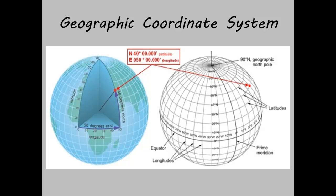Longitude and latitude can locate exact positions on the surface of the globe. However, they do not provide uniform units of measure for length and distance. Only along the equator does the distance represented by one degree of longitude approximate the distance represented by one degree of latitude.